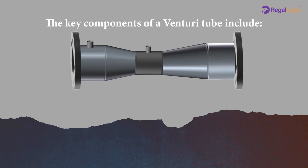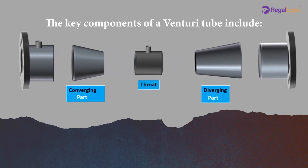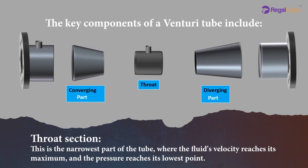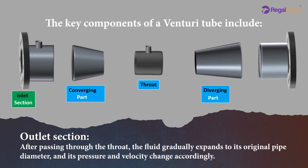The key components of a venturi tube include: the inlet section, where the fluid enters the tube and its initial pressure and velocity are measured; the throat section, which is the narrowest part of the tube where the fluid's velocity reaches its maximum and the pressure reaches its lowest point; and the outlet section, where after passing through the throat, the fluid gradually expands to its original pipe diameter and its pressure and velocity change accordingly.